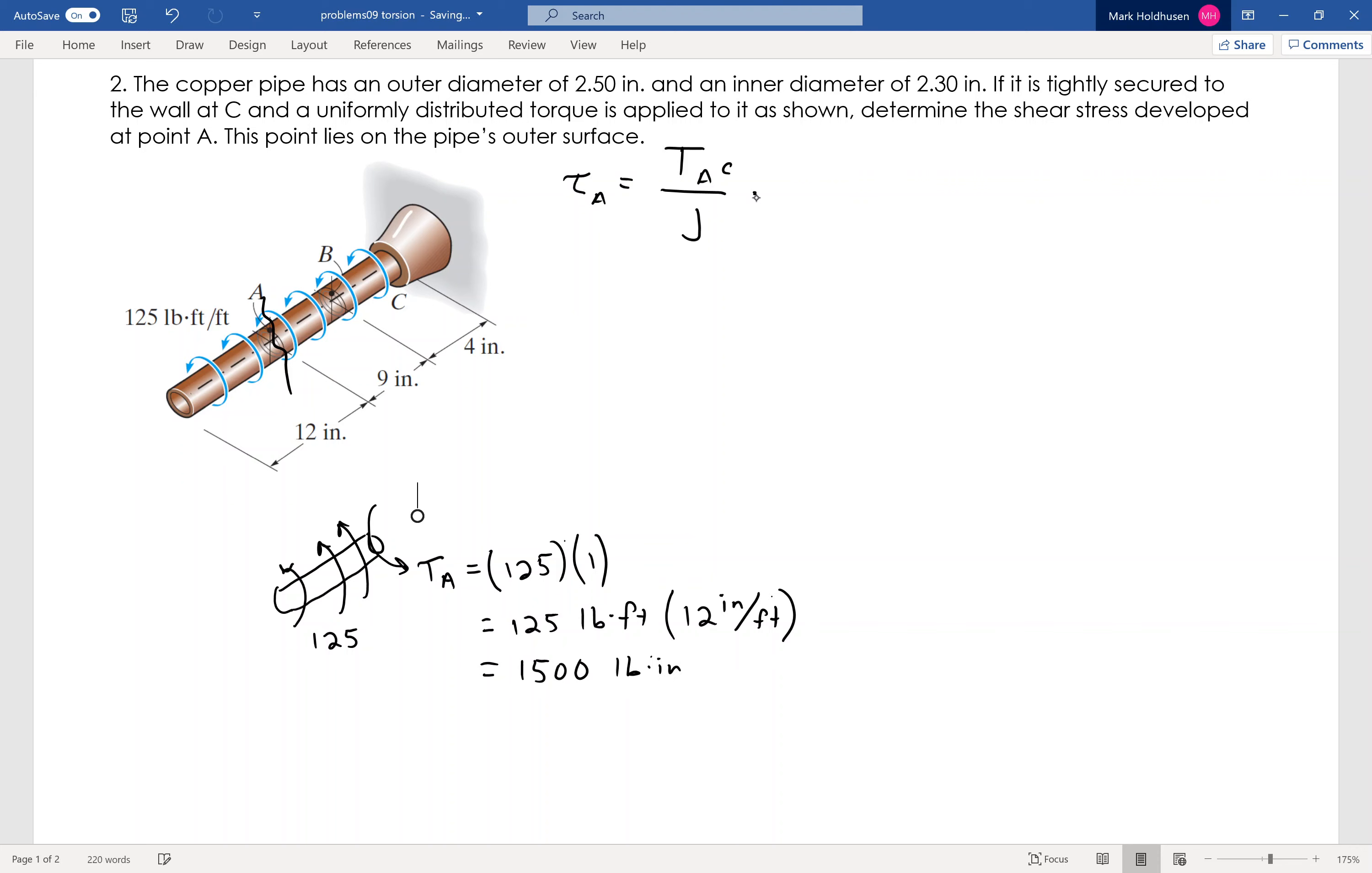So now I've got everything in pounds and inches. I can say 1500 pound-inches times C. That's at the outer surface, which is going to be not 2.5 inches, which is the diameter, but 1.25 inches, which is the radius. It's distance from the center for C.